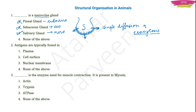Other examples of merocrine glands include sweat glands, goblet cells, and lacrimal glands for tears. These are all merocrine glands.